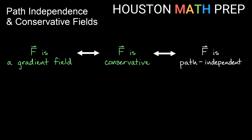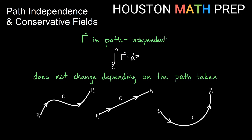We're going to focus on path independence first. If our vector field is path independent, and we think about finding the work along the curve, that is not going to change based on the path we take. It doesn't matter if I start at p0 and end at p1 taking one path, a straight line, or some path that goes way out and comes back around — all the work along these curves due to the vector field is going to be the same.